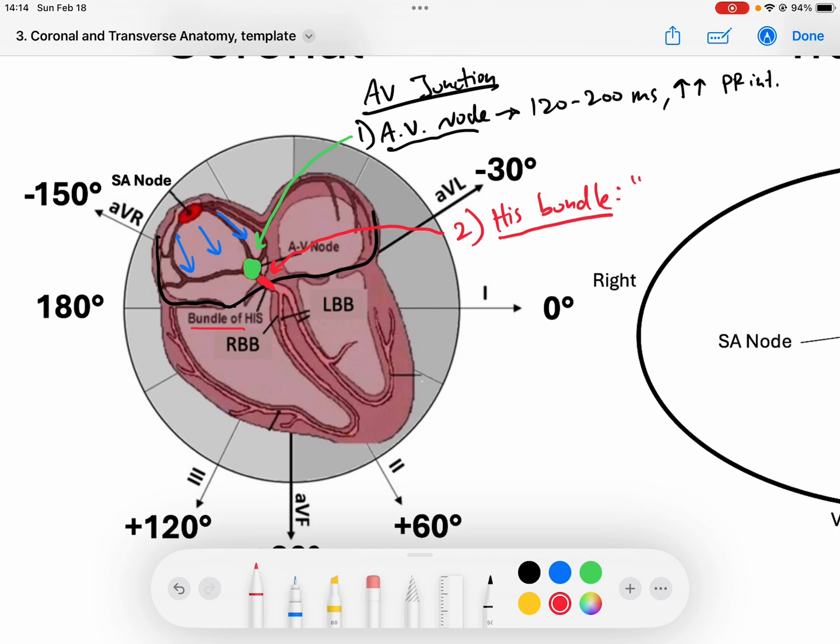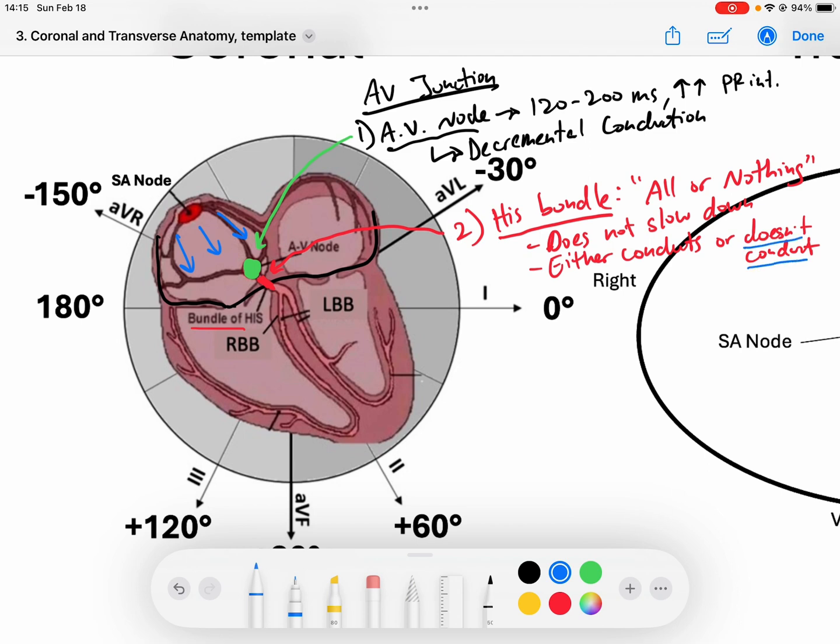Second degree type 2 AV blocks are characterized by diseases of the His bundle. The His bundle has a certain type of behavior that's called all or nothing conduction. We said in the previous videos that the AV node does something called decremental conduction, where it can slow it down. But the His bundle does not slow. It either conducts or doesn't conduct.